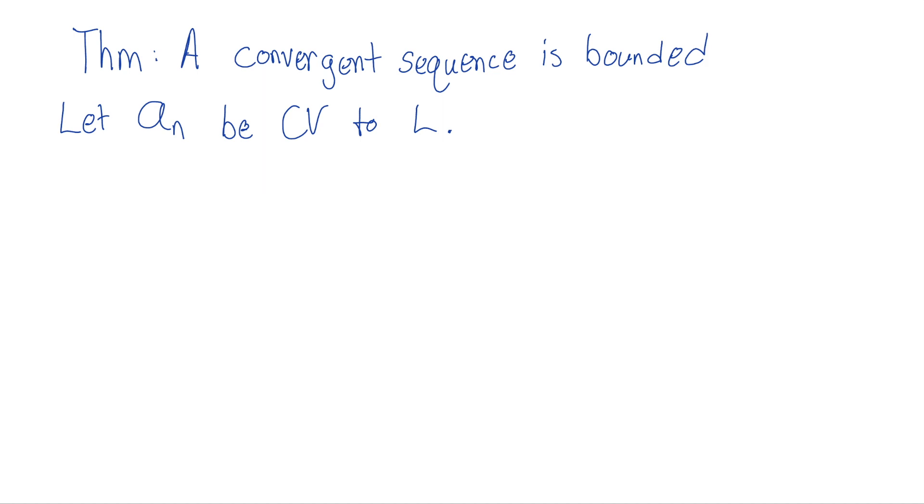What does that mean? What's the definition of a sub n converging to L? Well this means for all epsilon greater than zero, there exists some capital N in the natural numbers such that for all little n greater than this N, the absolute value of our sequence minus its limit is less than epsilon.